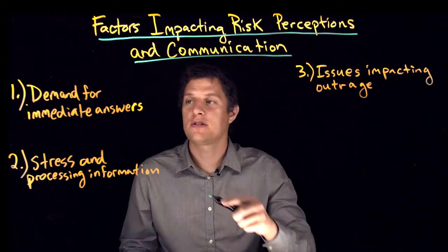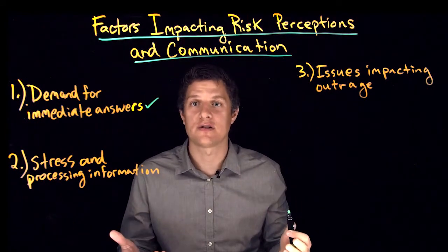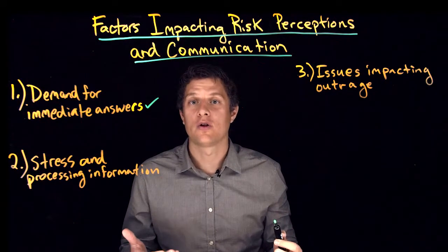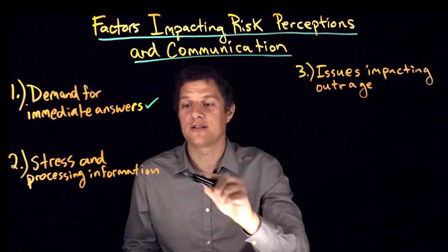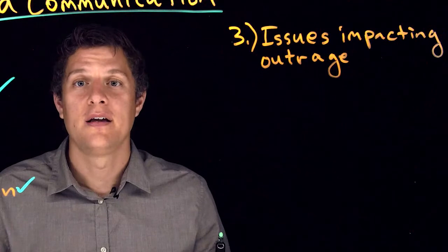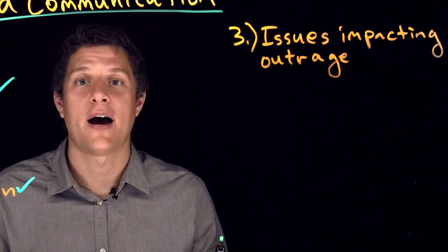Number one, people's demands for immediate answers in situations of uncertainty. Number two, the role of stress in how people process information. And number three, issues that impact the general public's outrage.